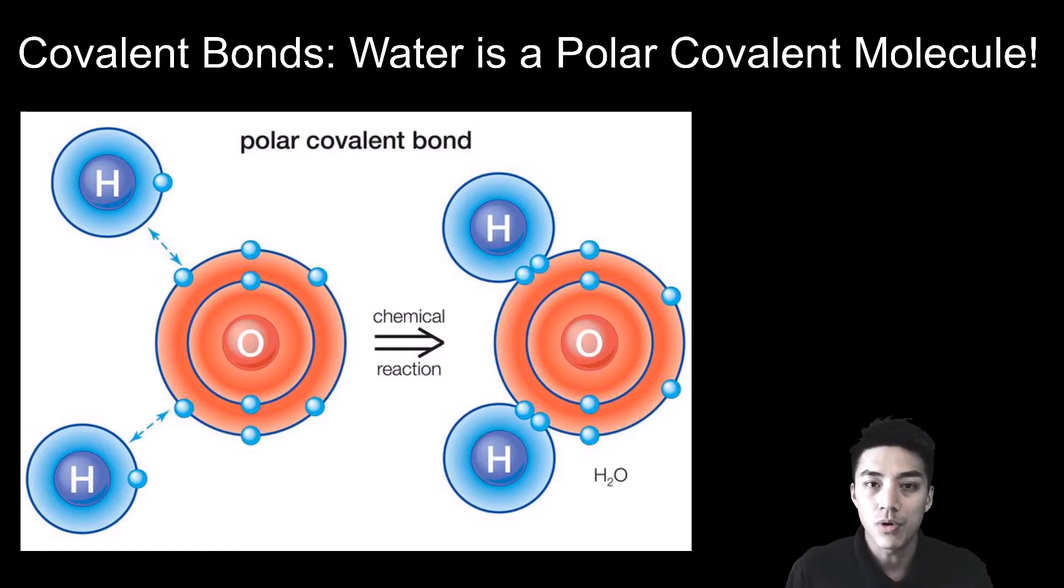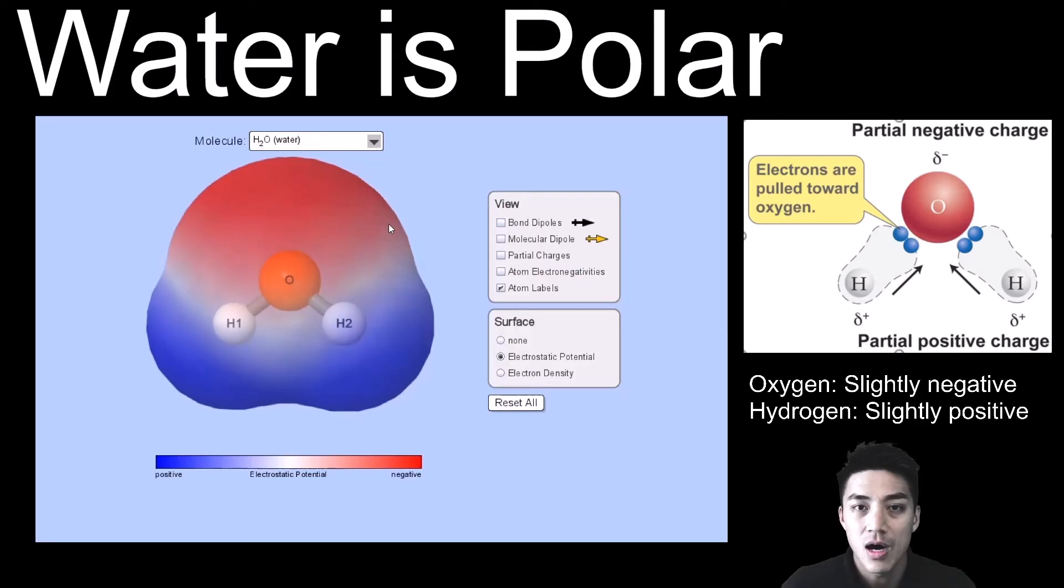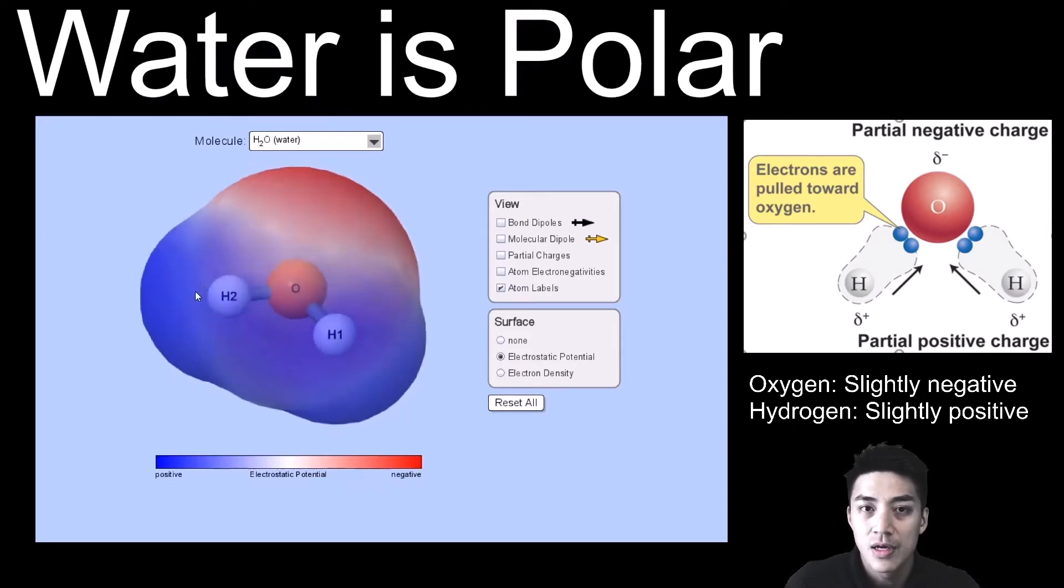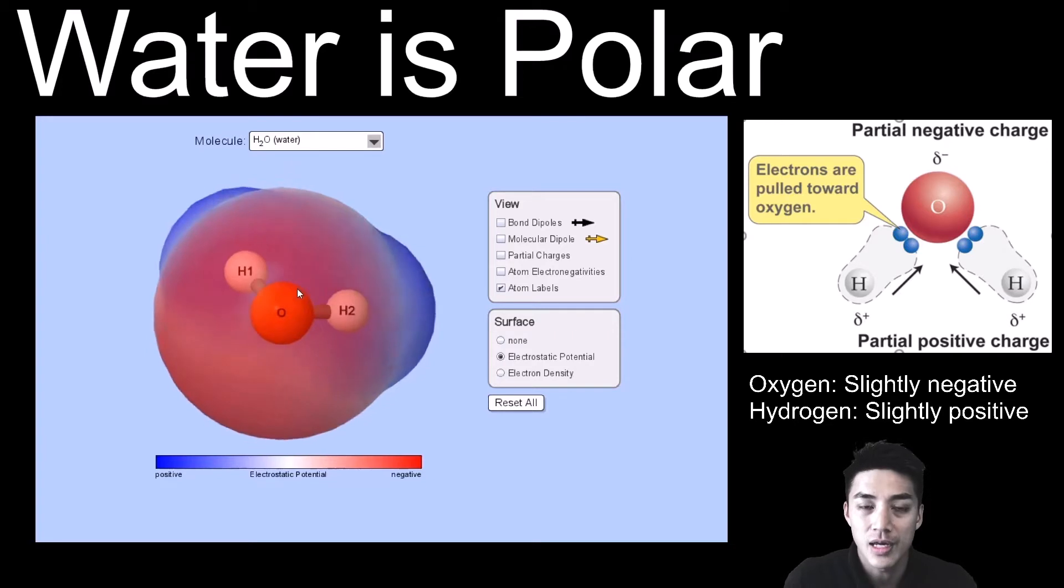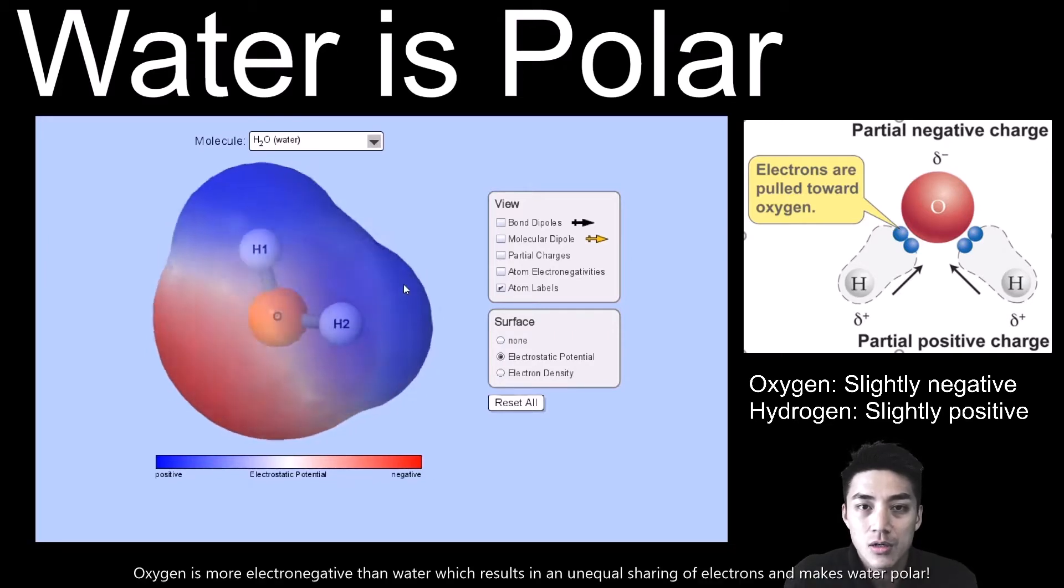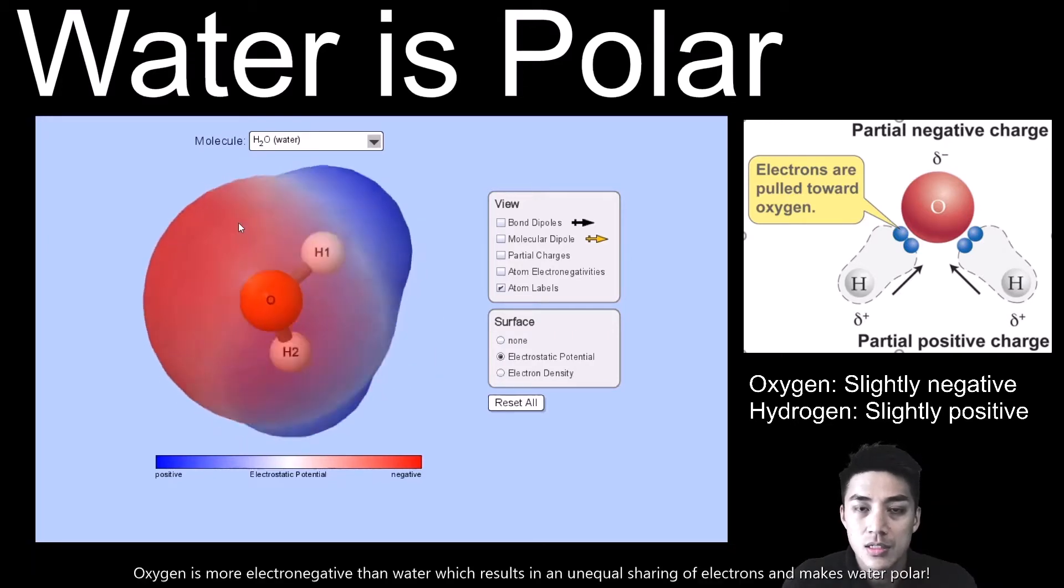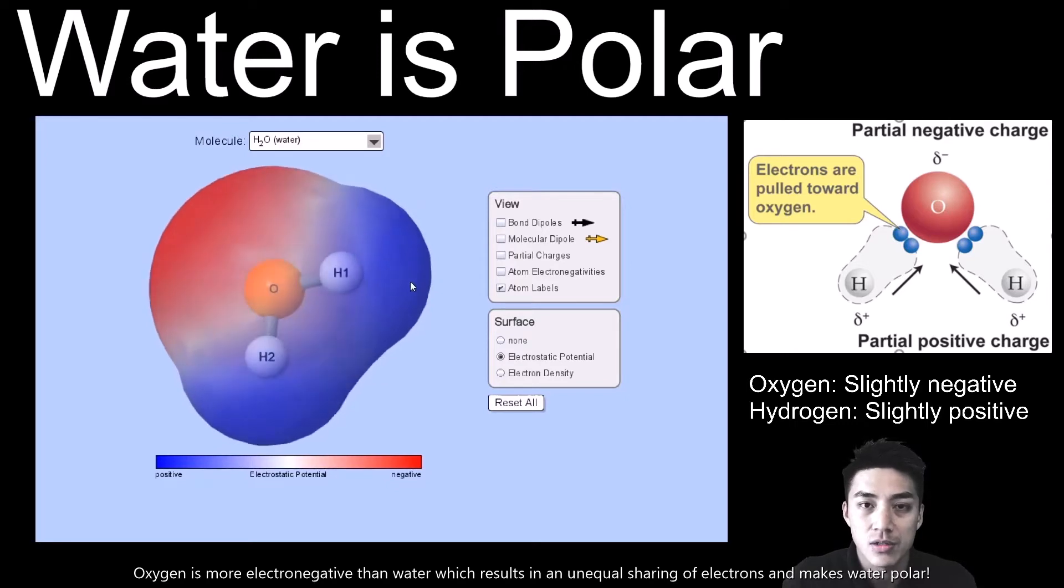Water is also polar, which means it has a slight static charge. This polarity lends water many of its incredible properties. Oxygen is colored red. Red just means that it's slightly negative. And the reason why it's more negative is because oxygen is more electronegative. It wants the electrons a little bit more than the hydrogens do, so there's this unequal sharing of electrons.